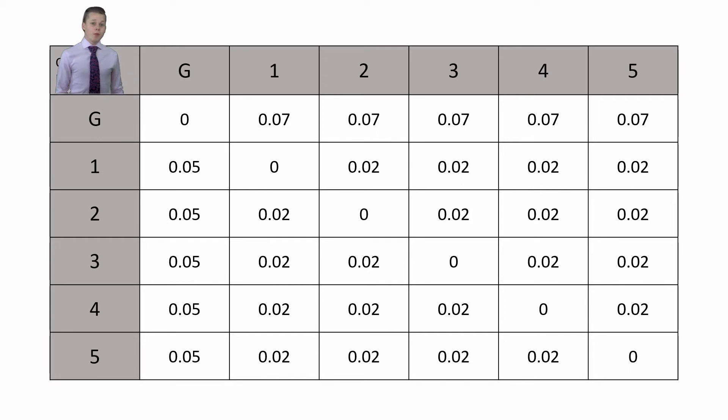We will begin with the probability density function of an origin destination matrix. This is an array of probabilities with the columns representing origins and the rows representing destinations. Each number is the probability that a passenger is going from the specified origin to the specified destination. Now the next step is to make a cumulative distribution function of the origin destination matrix by successively adding to each box the value from the previous box. Let's see that in action.